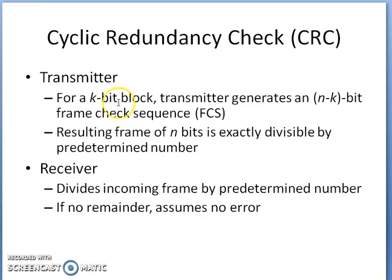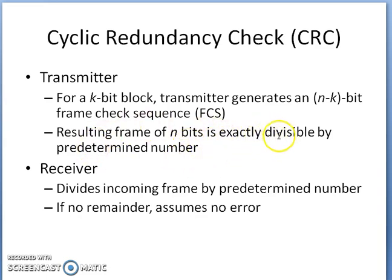Another error detection scheme is Cyclic Redundancy Check, or CRC. In the transmitter, for a k-bit block of message, the transmitter generates an n-minus-k bit frame check sequence. The resulting frame of n bits is exactly divisible by a predetermined number. This same predetermined number is available at the receiver, which divides the incoming frame by it. If there is no remainder, it assumes there is no error.